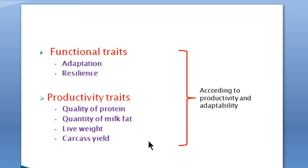According to productivity and adaptability, there are two main categories of traits. You have functional traits that deal with adaptation and resilience, and then you have productivity traits concerned with the quality and quantity of products, such as live weight and carcass, just to name a few.